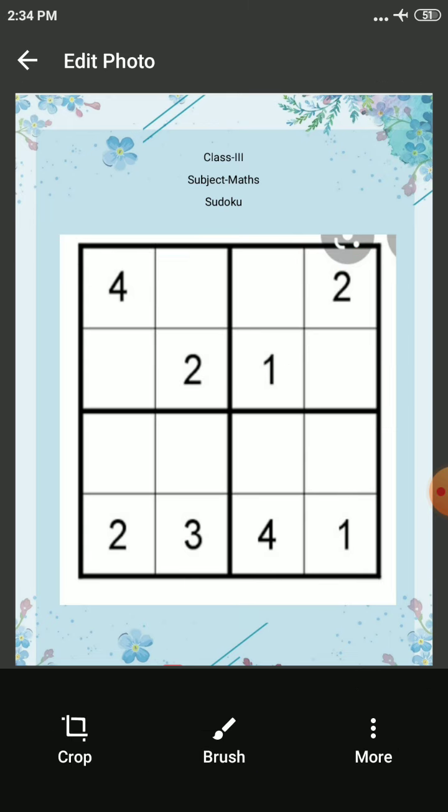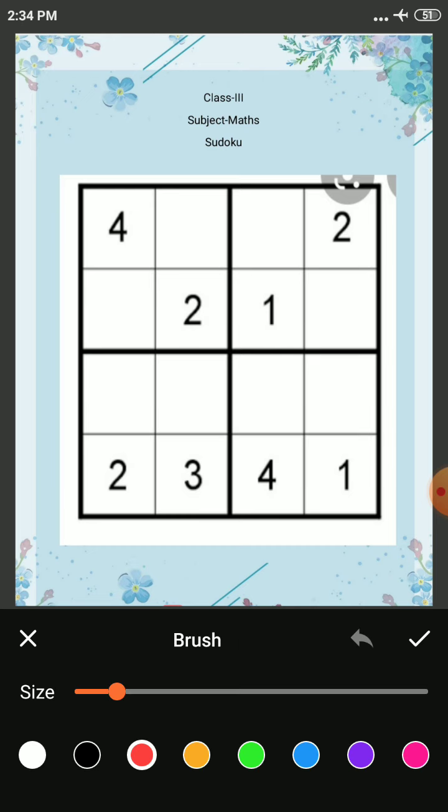What we have to do is fill the numbers 1 to 4 in each row and in each column, but we should take care that no number can be repeated in any row, column, or block.